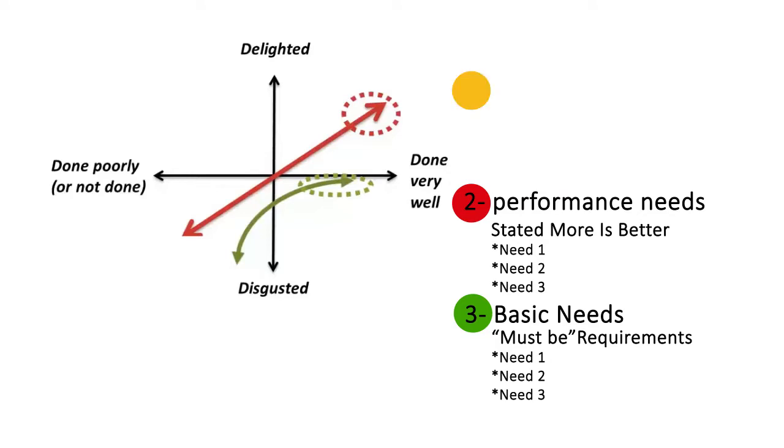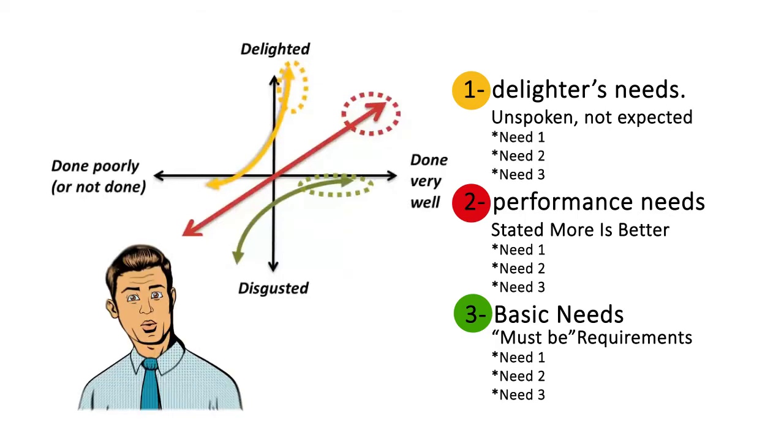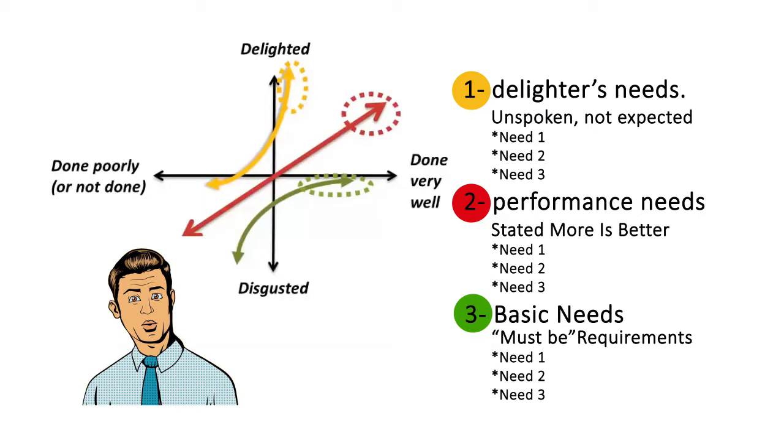The next category is the delighters needs. These are often unspoken needs. Customers can't tell you about these. They are not expected. So if you don't supply them, customers won't get upset. They were not expecting them in the first place.